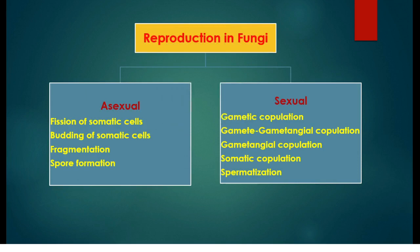Fungi are eukaryotic heterotrophs and they are reproduced by both asexual and sexual methods. In the last class we discussed about the asexual reproduction methods of fungi, which include fission, budding, fragmentation and sporulation.